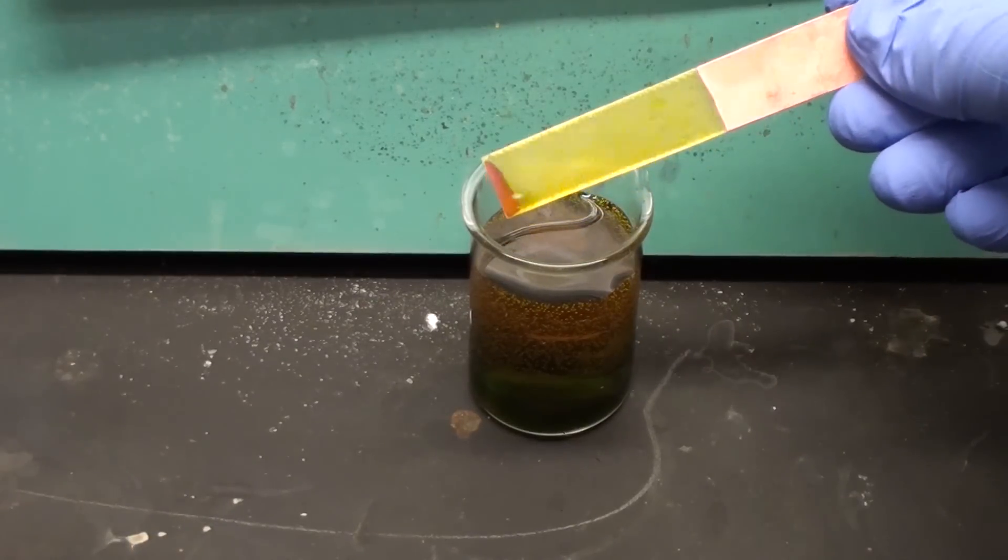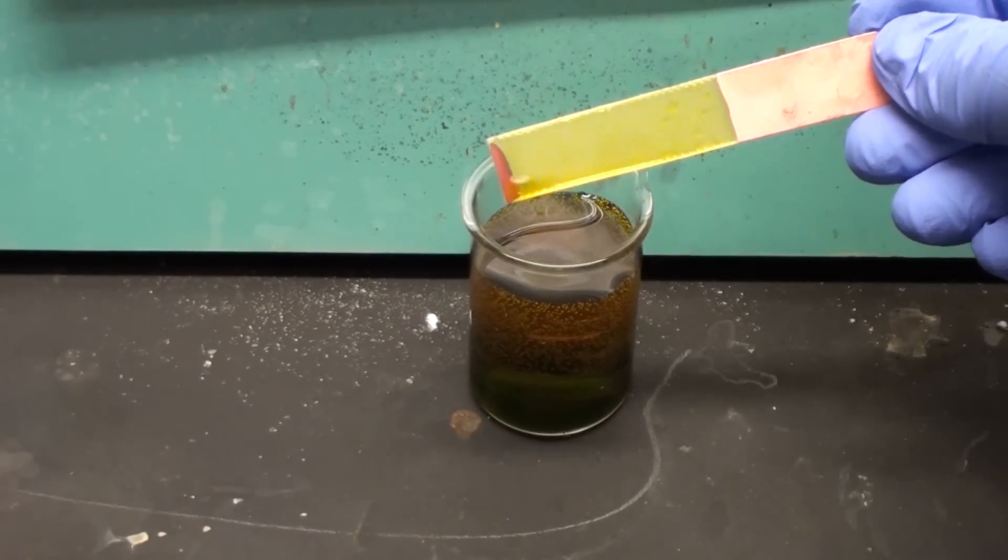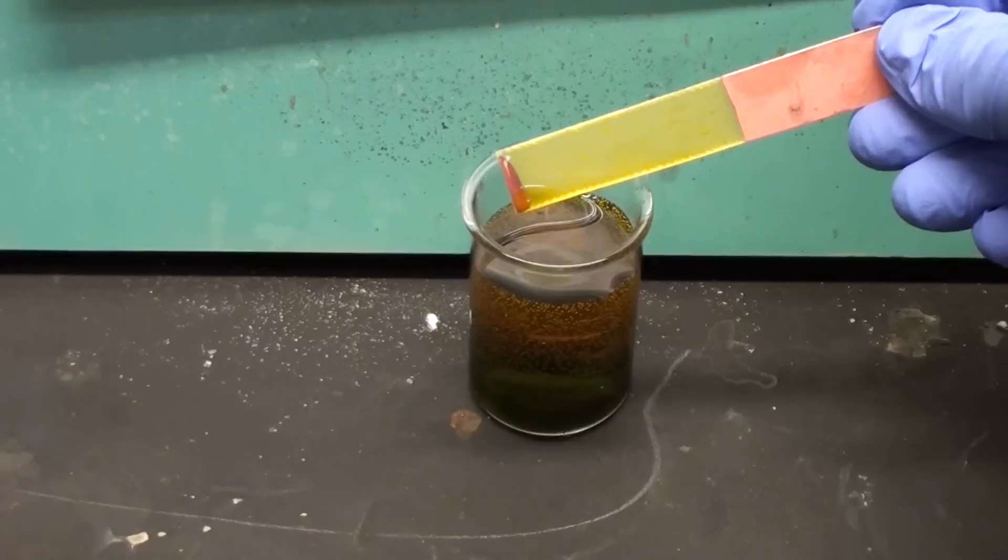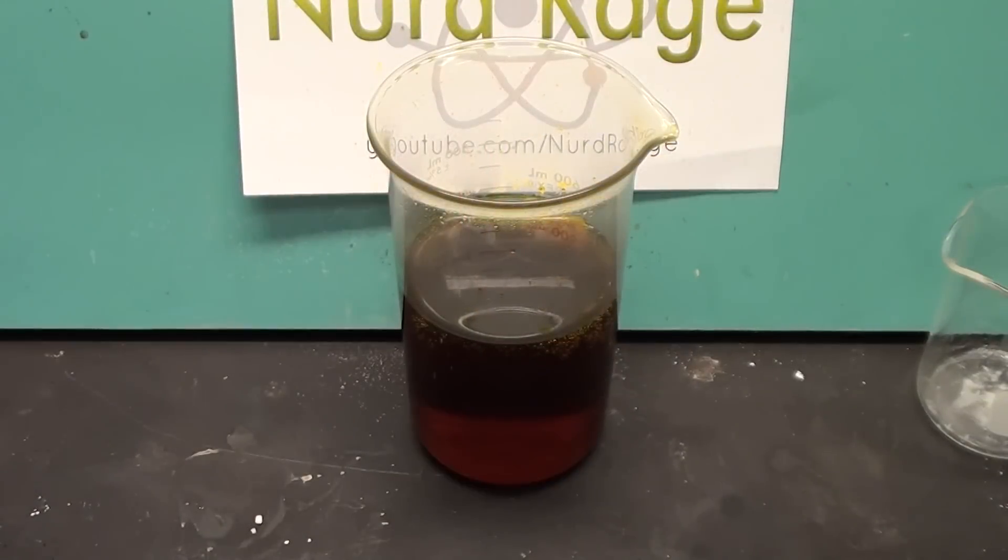Obviously in an actual PCB production run you would stir the mixture so you don't get that small piece of unetched copper at the bottom. Anyway we have successfully made ferric chloride.